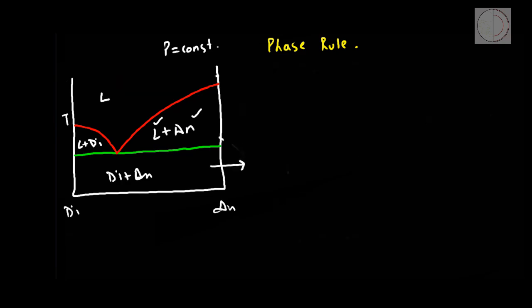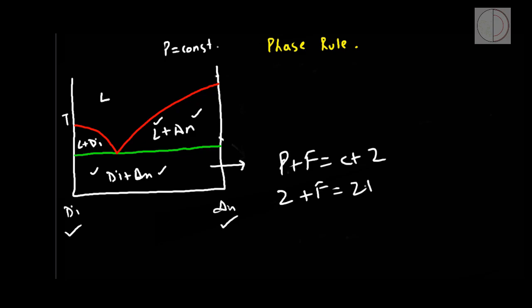In the diopsite plus anorthite field, the phase rule gives P plus F equals C plus 2. The number of phases is 2 — anorthite and diopside. Number of components is 2. Hence degree of freedom is 2, which is graphically reduced by 1 by keeping pressure constant, leaving a degree of freedom of 1. Thus these fields are also univariant.